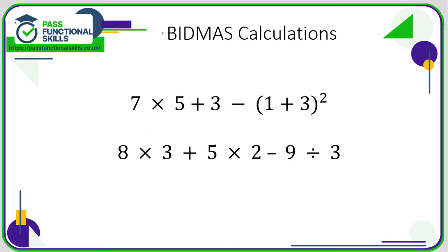Let's take a look at a few examples. In the first example, we have some brackets, so we need to do the calculation inside the brackets first. One plus three is four, so we can change that to four squared — four to the power of two. We also have indices, so we're going to take care of the four to the power of two next, which means four times four, which is 16.